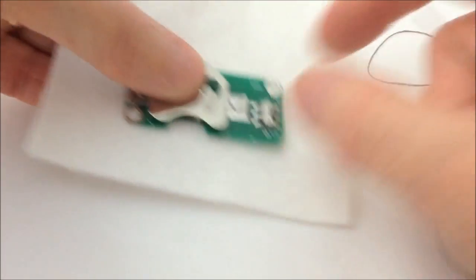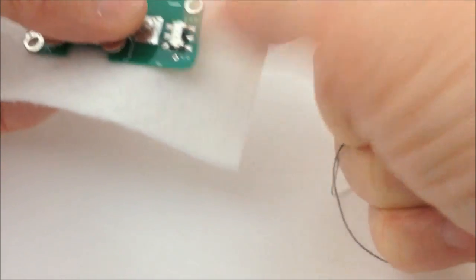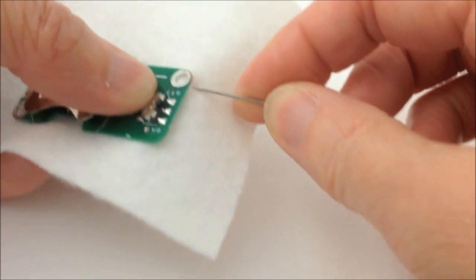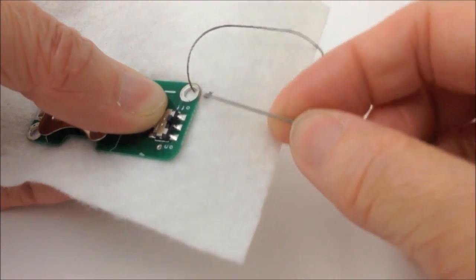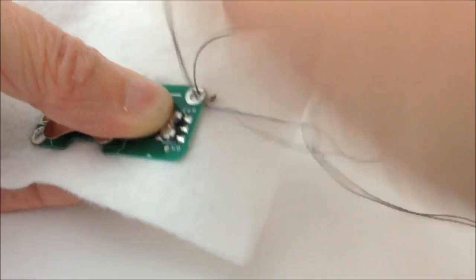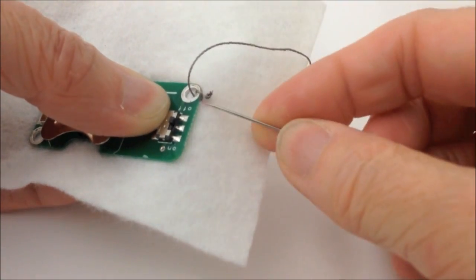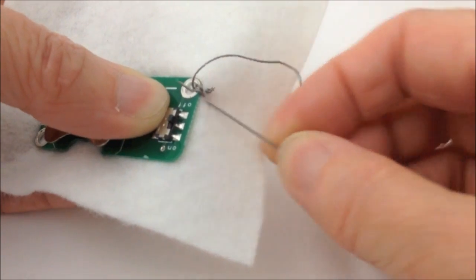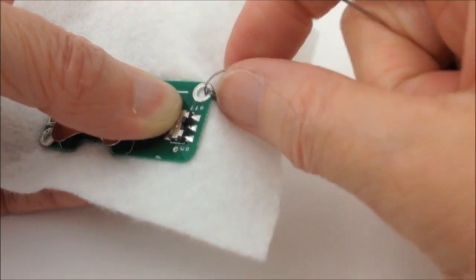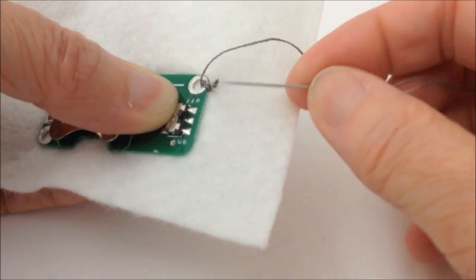So I'm going to start stitching on the negative side, and I'm doing what I call over sewing stitches, taking my needle into the backing felt and through the hole on the circuit. Pulling the stitches very tight—that's really quite important. You don't want loose or baggy stitches here, so nice and tight.